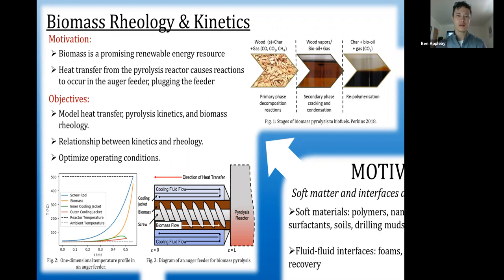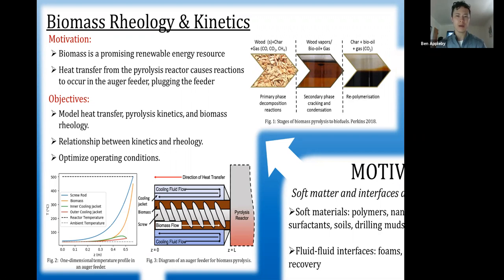The three stages also include repolymerization of the char, bio-oil, and gases. Pyrolysis is categorized by heating rates and residence times. Auger feeders are the most common feeding system in the industry used for biomass, because they provide a constant flow of biomass and due to their screw conveyor-like setup it can be pressurized and gives a means of controlling the pressure within your pyrolysis reactor.